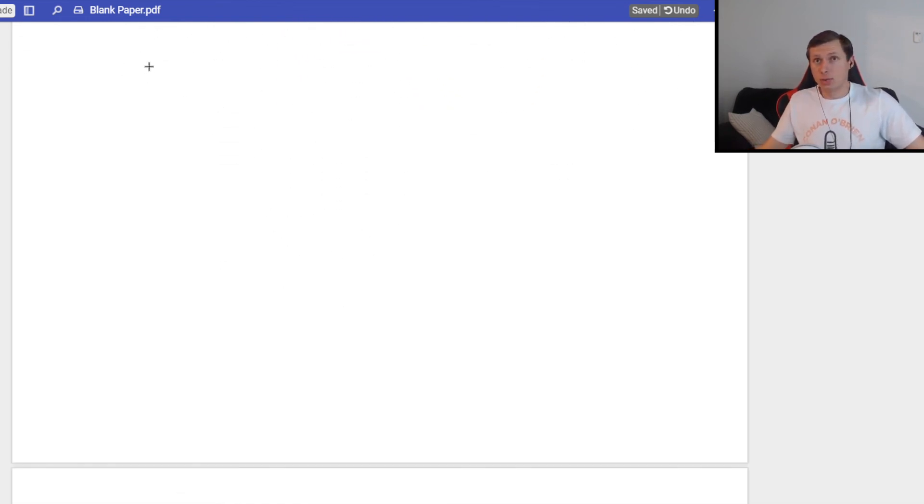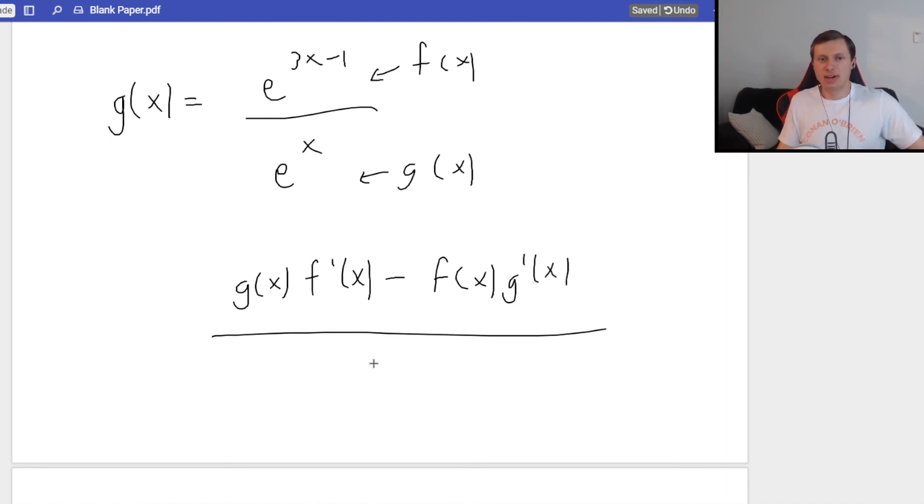So, here's the last derivative question I have for exponential functions. Let's say I have g of x is equal to e to the 3x minus 1 divided by e to the x. And I want to take the derivative of this. Now, if I wanted to, I would use the quotient rule. What does the quotient rule say? If my numerator is f of x and my denominator is g of x, then my derivative is going to be g of x times f prime of x minus f of x times g prime of x, divided by g of x, that whole thing, squared. Now, I've got some good news for us. We can, if we want to, do all of this, or we can use our properties of exponents and completely avoid the quotient rule altogether.